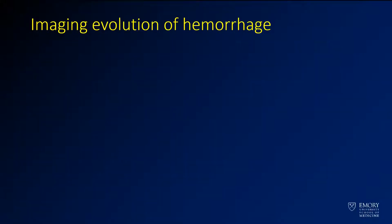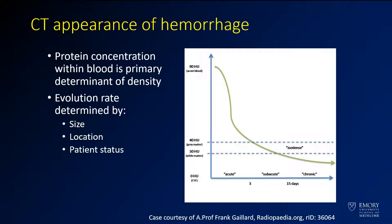Now we'll talk about how the imaging appearance of hemorrhage changes with time on various modalities. The CT appearance of hemorrhage is probably the most straightforward. When you have a hemorrhage on CT, the thing that most determines what it looks like is how much protein is in it. Blood is very proteinaceous fluid, both in the serum and in the red cells, and that makes it more dense than the adjacent tissue.